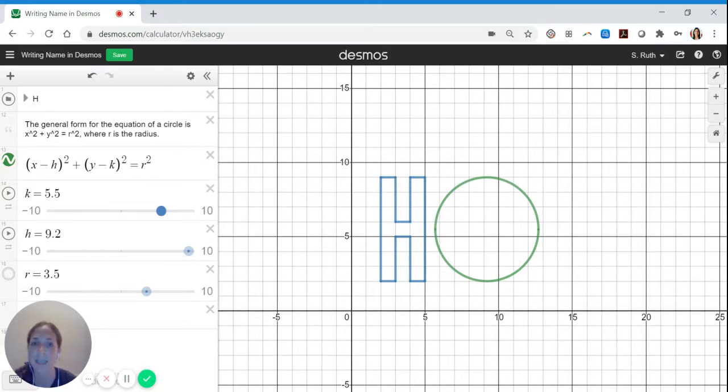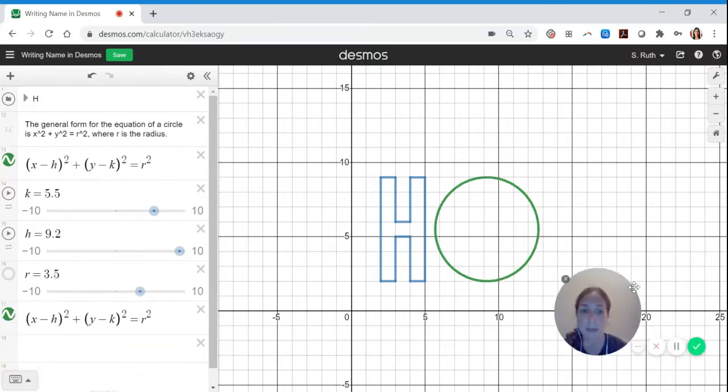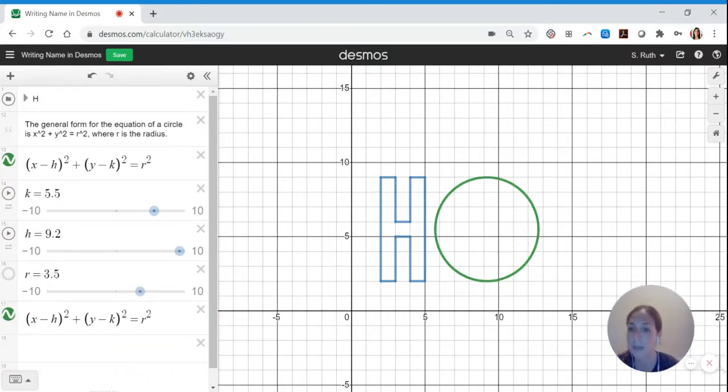So anyways, that's the outside of the O. So if I'm happy with that as the outside of my O, then I've got to work on the inside. So I need another circle. So again, I've already shared I'm a fan of copy paste. So let's just copy this equation down here. And now the only problem is I can't use the same H and K because I've already chosen H and K.